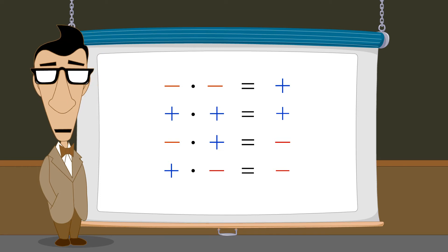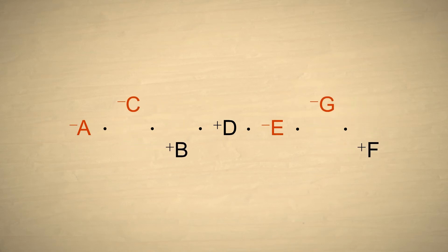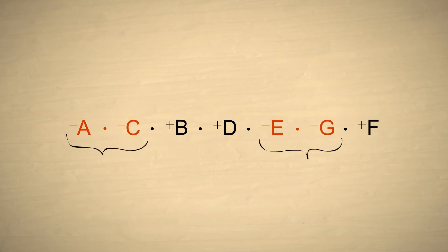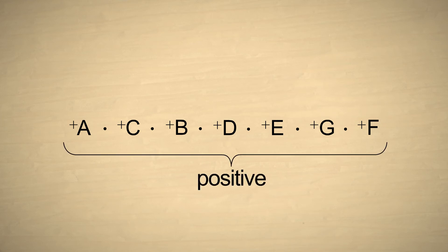Understanding this can help us simplify multiplication problems involving multiple numbers of different signs. Let's say we have a bunch of positive and negative numbers which are multiplied. The commutative property of multiplication says that we can arrange these numbers in any way we like. So let's group pairs of negative numbers together. Each pair of negative numbers creates the same result as if the pair was positive. So we can change their signs to positive without changing the result of the multiplication. Since there was an even number of negative numbers, after each pair of negatives was changed to positives, there were no negative numbers left over. Therefore, the result of the multiplication is positive.